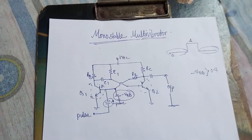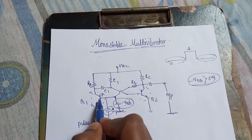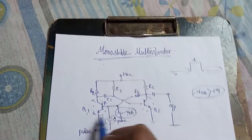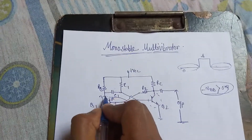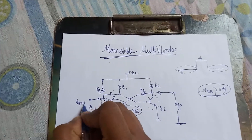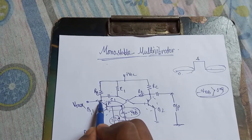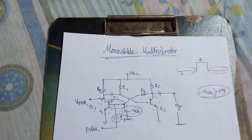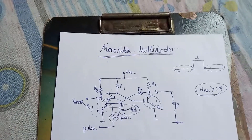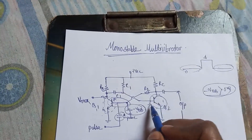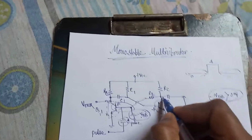We assume minus VBB is greater than 0.7 volts — so minus 2 volts, 3 volts, or whatever it is. Since minus VBB is connected to the base of NPN transistor Q1, the base is in the negative region, so transistor Q1 is in the cutoff region. When Q1 is in cutoff, the voltage here is maximum — a positive maximum voltage — which goes through the capacitor to the base of transistor Q2.